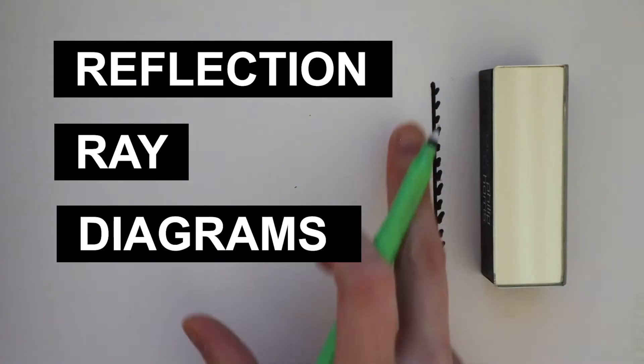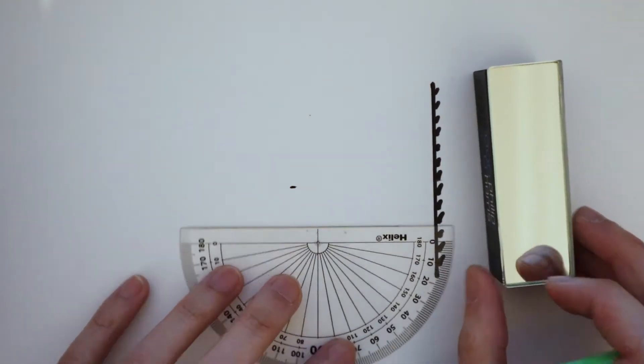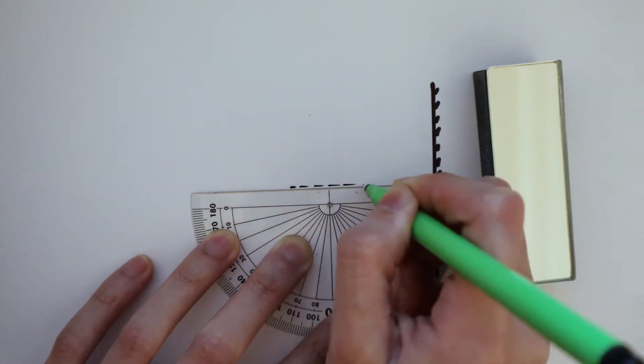Here is a plain mirror. Let me draw a line at 90 degrees to the surface of the mirror. This line is known as the normal.